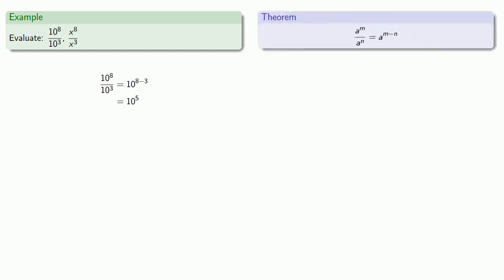And so if I want to find x to the eighth divided by x to the third, that's x to power 8 minus 3, x to the fifth.